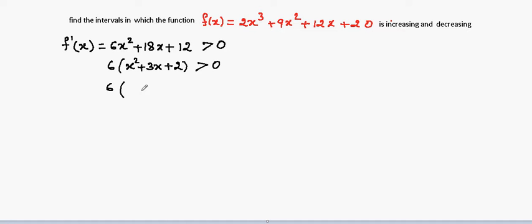Or if I split these in terms, then it is (x + 2) and (x + 1). This should be greater than 0. So I now find the critical points, which we get by equating the brackets to 0.